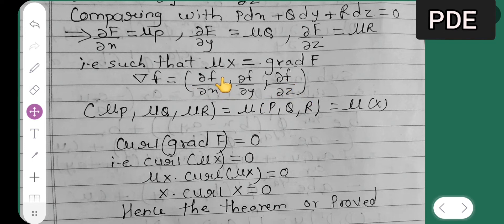Okay, so what is your ∂f/∂x? It is nothing but μP. In the bracket, μP comma. What is ∂f/∂y? μQ. What is ∂f/∂z? It is nothing but R, right? μR. So take this μ to be common outside. Then what is left? P, Q, and R over here.